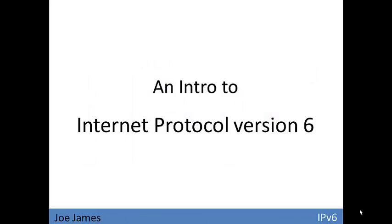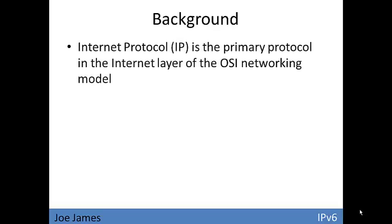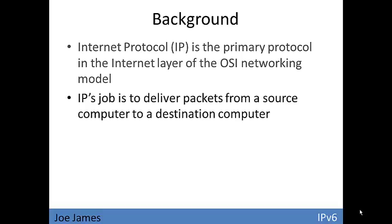Hi, I'm Joe and this is an introduction to Internet Protocol version 6. First, a little background on the Internet Protocol. Internet Protocol is a primary protocol in the Internet layer, which is layer 3 of the OSI networking model. Its job is basically to deliver packets from a source to a destination, and this is mainly performed by routers.